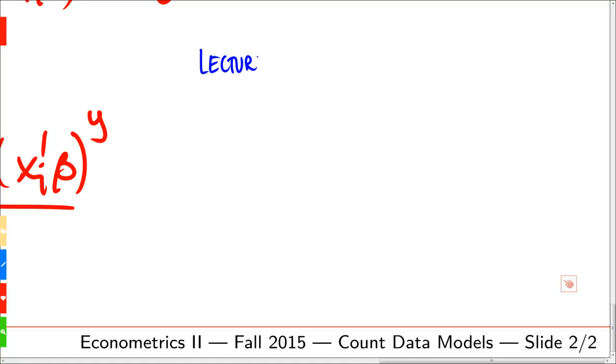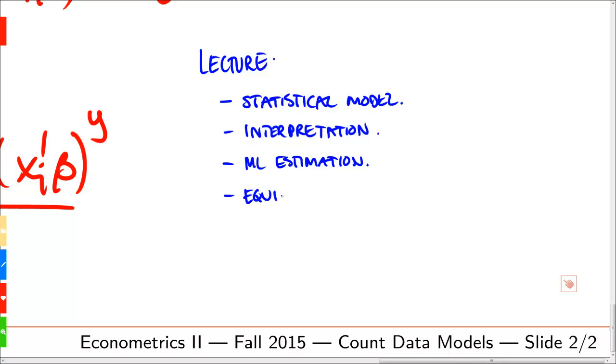During the lecture, we will briefly look at the statistical model, as outlined here. Then we will talk about an interpretation of the coefficients. We will talk about maximum likelihood estimation. And finally, we will talk about equi versus overdispersion and consider a few extensions of the Poisson regression model that allow for overdispersion.